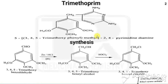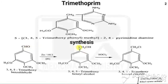For the synthesis of trimethoprim, the starting material is 3,4,5-trimethoxybenzaldehyde. The aldehyde on reduction gives a primary alcohol, so instead of CHO we write CH2OH. On treatment with thionyl chloride, the OH is replaced by chlorine, giving the chloro derivative.